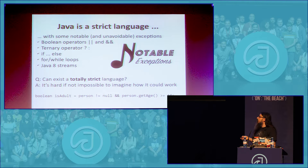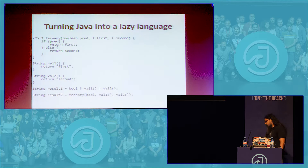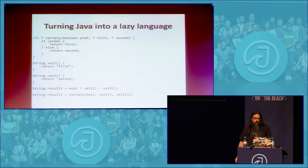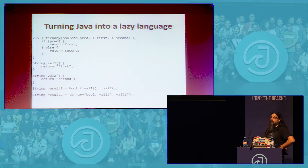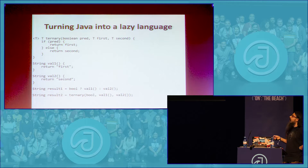It's quite easy to use laziness after Java 8. Let's give a very simple example. I wanted to create a method that does the same thing as the ternary operator. In the strict form, if you pass val1 and val2 as arguments, both will be evaluated regardless of which one is used inside the method. This is strict evaluation.